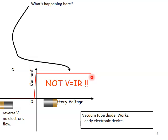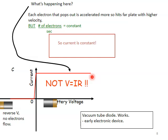Why is it not Ohm's law? Let's talk about what can go on. Basically what happens here is each electron that has popped out of the metal is accelerated more, so it hits the far plate with a higher velocity. But the definition of current is the number of electrons or charges, and there's a charge on an electron per second, but it happens to be constant because we have the same number of electrons coming off per second. We don't have any more. So the current ends up being constant.